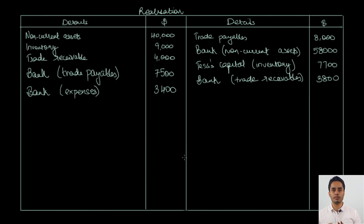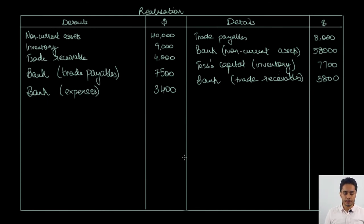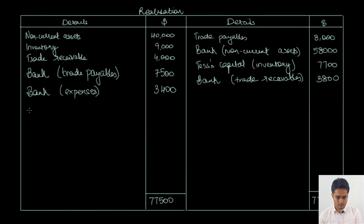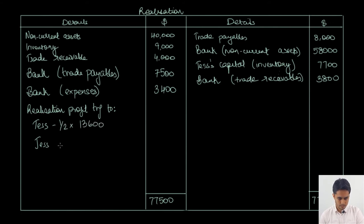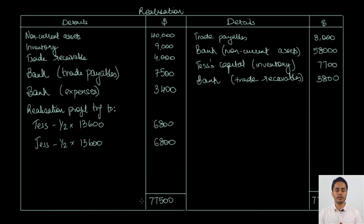Our entries in the realization account are complete. We just need to see whether the credit side is greater than the debit side for a profit, or the debit side is greater for a loss. Taking the totals, the credit side is greater than the debit side, so it is a realization profit. The total realization profit is 13,600. The profit-sharing ratio is equal, so we divide 13,600 equally between Tess and Jess — each gains 6,800 as realization profit.